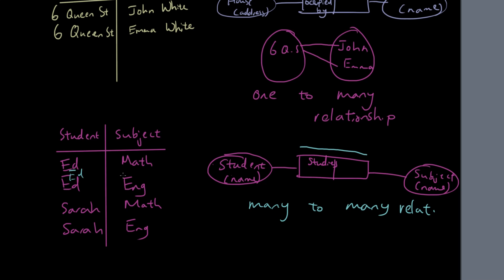You can't have Ed and math again, because that wouldn't make sense. So the combination of both values is unique, but each individual value could repeat. This is called a many to many relationship. If you're going to draw a mapping of it, you've got many things pointing to Ed, many things pointing to Sarah, many things pointing to math, many things pointing to English. So it's many to many.